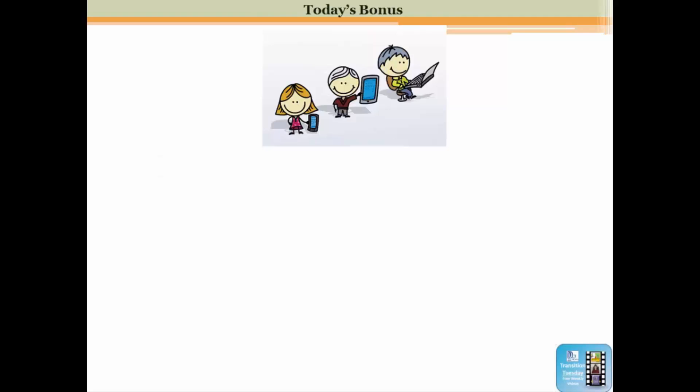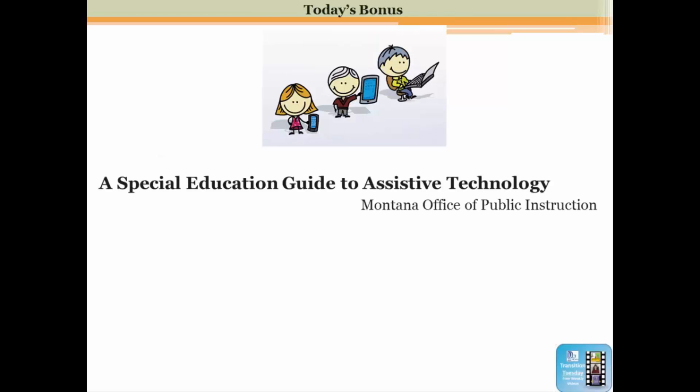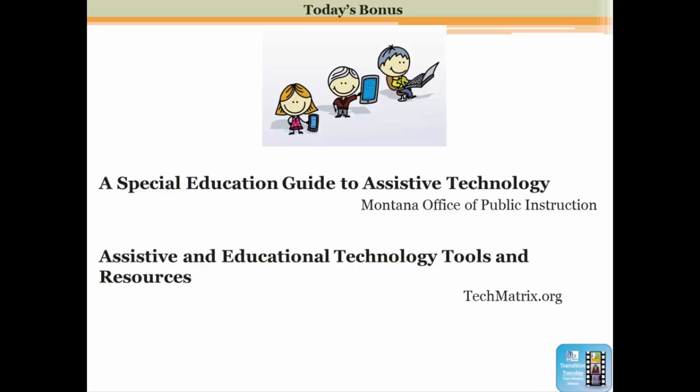For today's bonus, I'll be sending you a PDF called A Special Education Guide to Assistive Technology. This PDF provides information on assistive technology assessment, choosing different devices, purchasing them, and how to train in using an assistive technology device or service. I'll also be sending you a link to a website, assistive and educational technology tools and resources, from textmatrix.org. This is a site where you can go in and based on your criteria, you can look at information about different assistive technology devices.